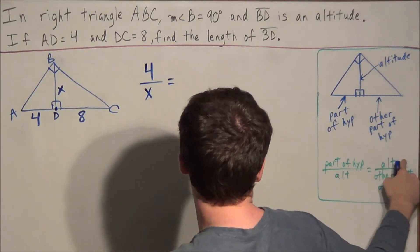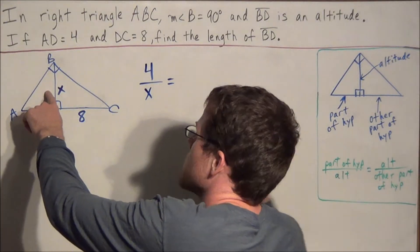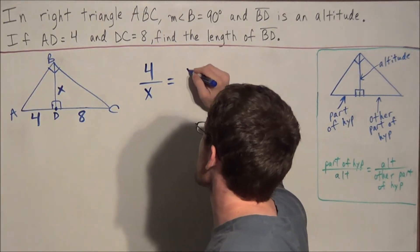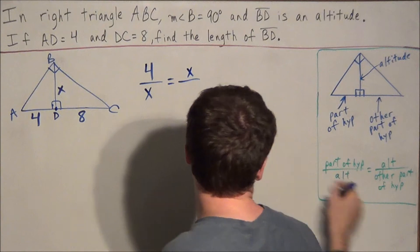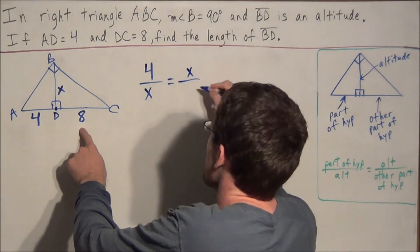and now in the numerator we have the altitude once again. But we don't know the altitude so we're still going to call it X over the other part of the hypotenuse, which in this case is 8.